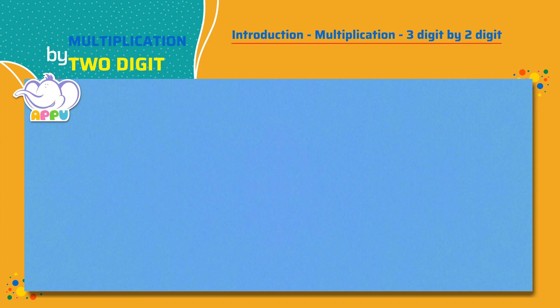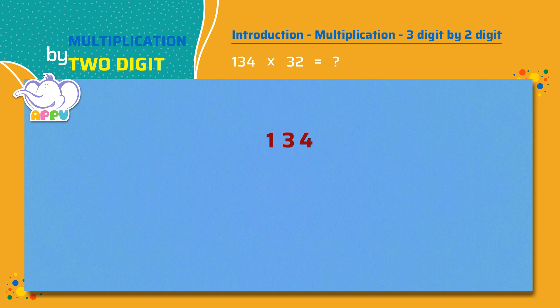Multiply a three-digit number by a two-digit number. Let's multiply 134 times 32. Let's write 134 and use the multiplication symbol below 134 as shown, and write the number 32.